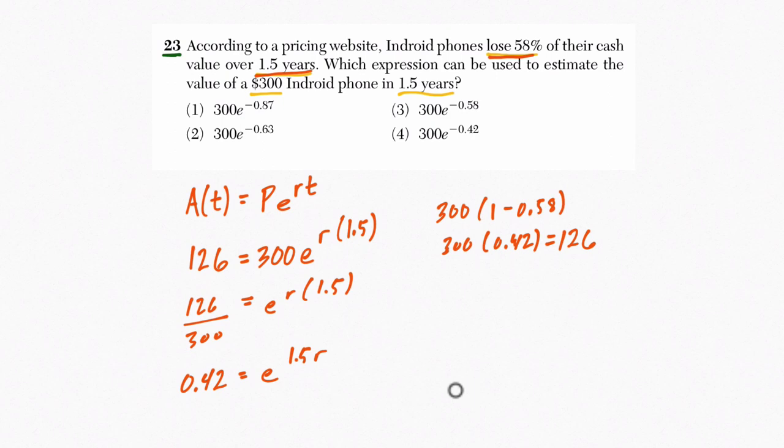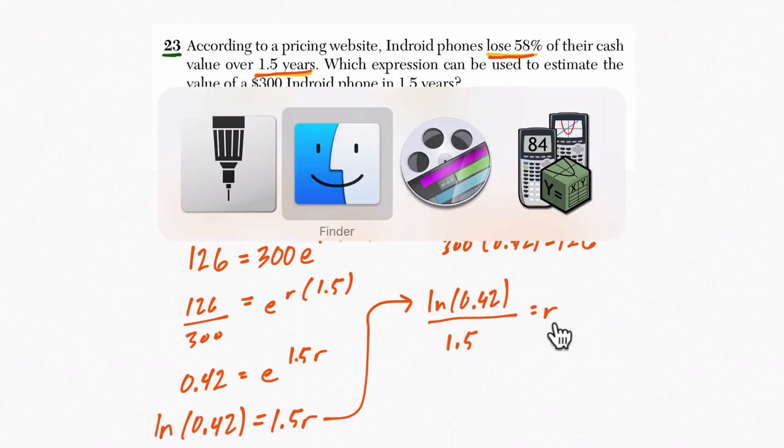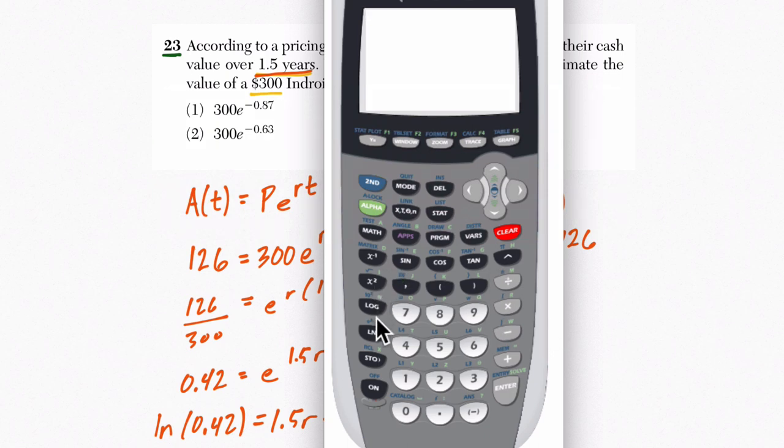And what I want to do is figure out what R is. How do we do that? Well, we take the natural log of both sides. So the natural log of 0.42 is going to equal 1.5 R. This goes back to an idea. The natural log of this is just the exponent. And that is the definition of a log. All right? So what do we do next? Well, the natural log of 0.42 divided by 1.5, that will give us our rate. So let's pull that up on a calculator. So we've got the natural log of 0.42. We're dividing it by 1.5, and that tells me the rate.